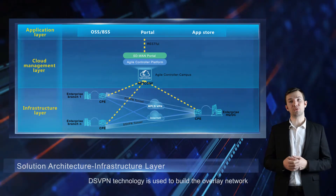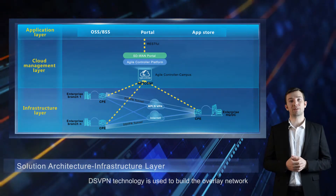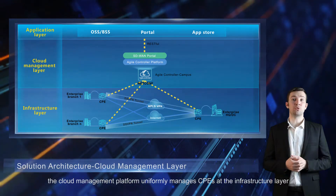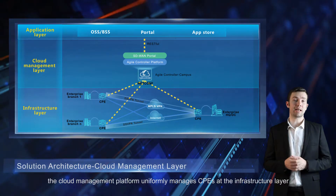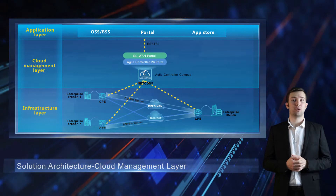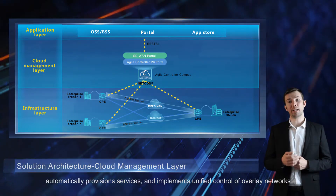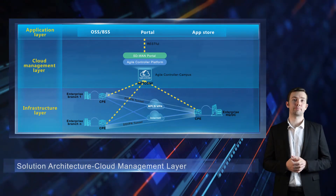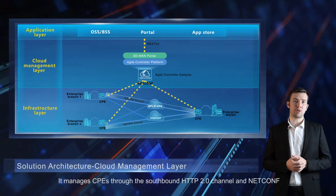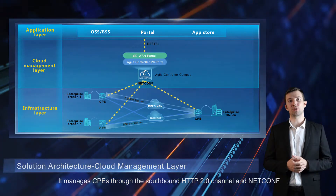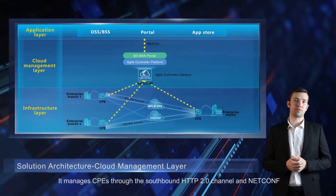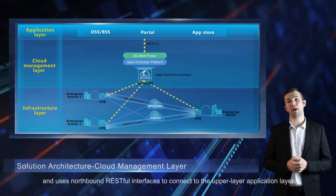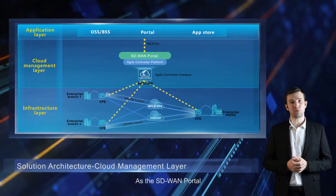DSVPN technology is used to build the overlay network. As the core of the SD-WAN, the cloud management platform uniformly manages CPEs at the infrastructure layer, automatically provisions services, and implements unified control of overlay networks. It manages CPEs through the southbound HTTP 2.0 channel and NETCONF, and uses northbound RESTful interfaces to connect to the upper layer application layer as the SD-WAN portal.